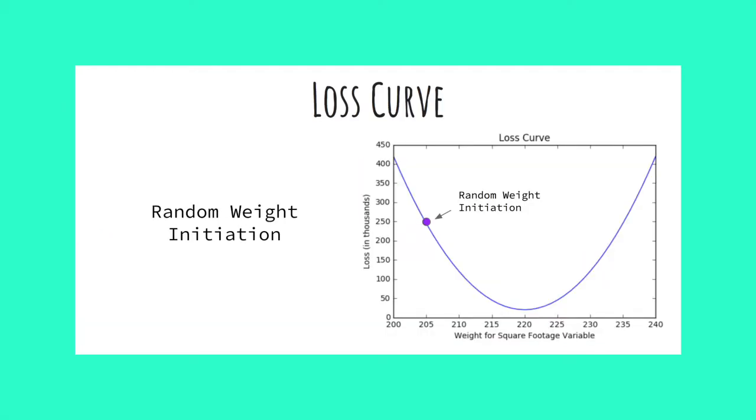Remember, we start with a random initiation of our weight and need to move downward on our loss curve until we get to the lowest point. Gradient descent is the algorithm we use to move down the curve.